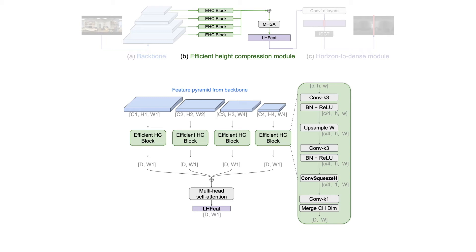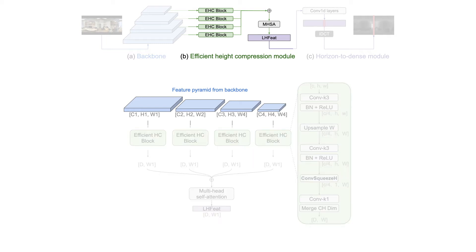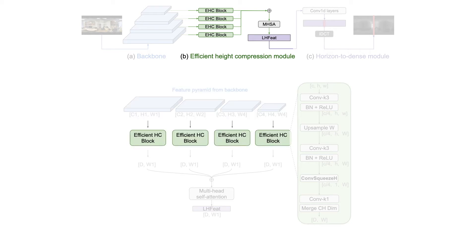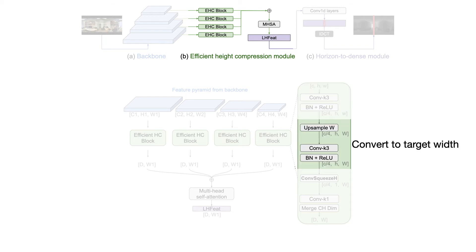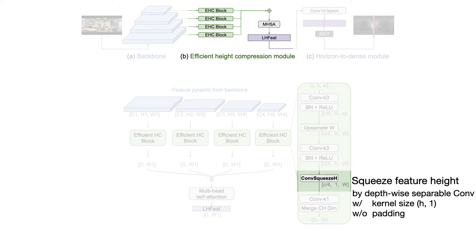Let's see how the Efficient Height Compression module works. The input to this module is backbone features at various numbers of channels and resolution, each of which is then fed into an EHC block. In the EHC block, a convolution layer is first employed to reduce the number of channels. Then the feature width is upsampled to the target size, which is followed by another convolution layer.